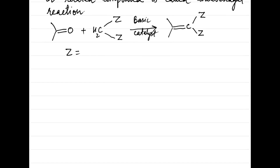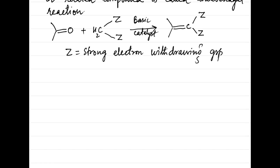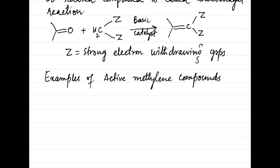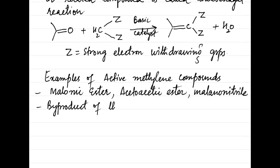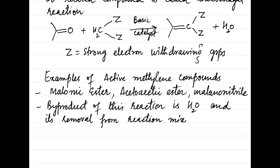Some features of this reaction are as follows. Typical examples of active methylene compounds are malonic ester, acetoacetic ester, malononitrile, etc. The byproduct of this reaction is water, and its removal from the reaction mixture shifts the equilibrium to the product side.